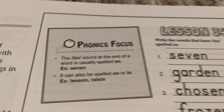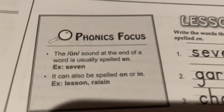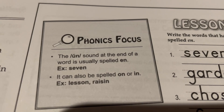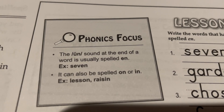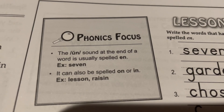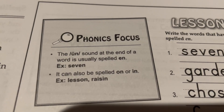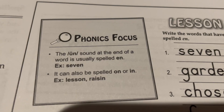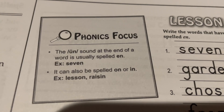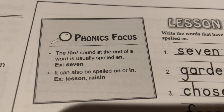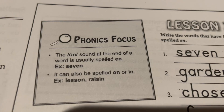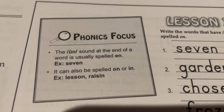Spelling Lesson 34, Phonics Focus. The un-sound at the end of a word is usually spelled e-n. Example: seven. It can also be spelled o-n or i-n. Examples: lesson, raisin.